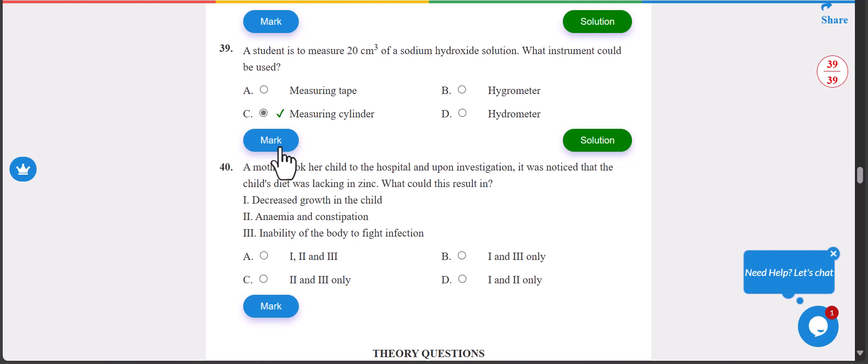And the last one, we are almost done with everything. Number 40: a mother took her child to the hospital and upon investigation it was noticed that the child was lacking in zinc. What could this result in? The answer is B, which is I and III - decreased growth in the child and inability of the body to fight infection. Let's check if that is the answer. The answer is B.